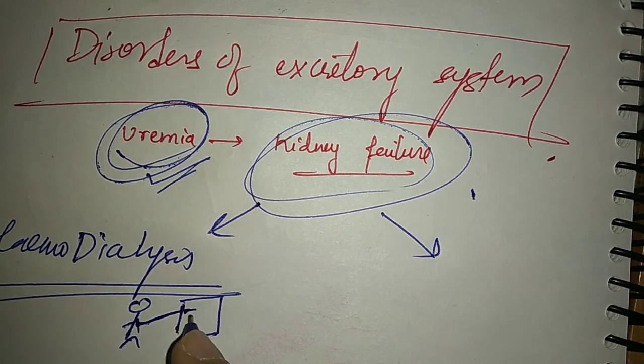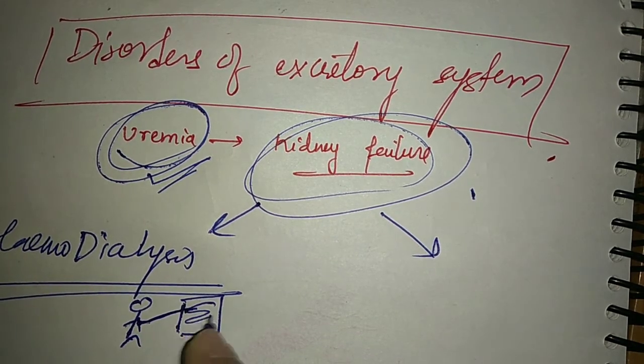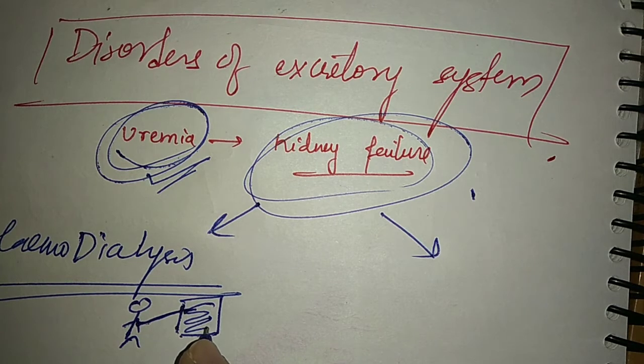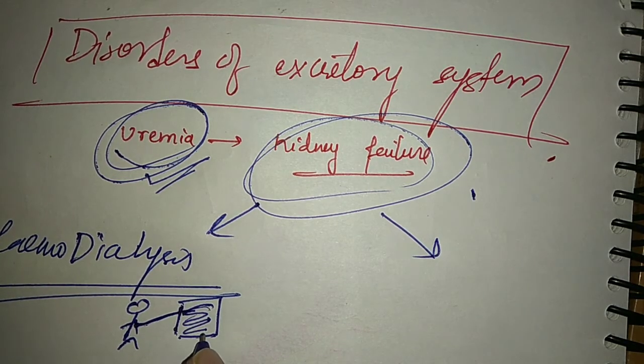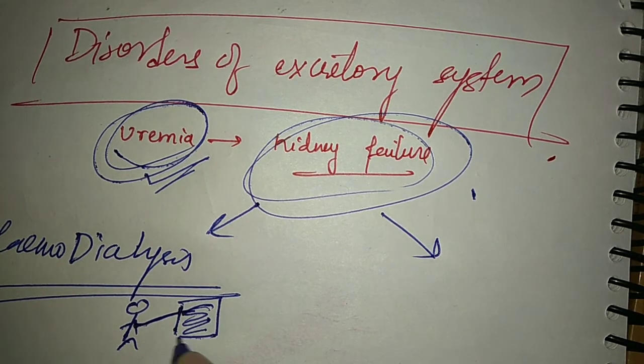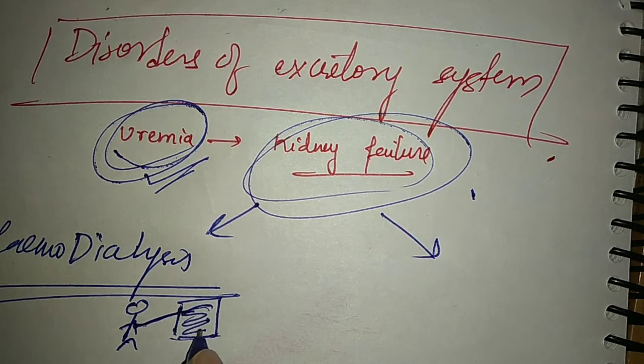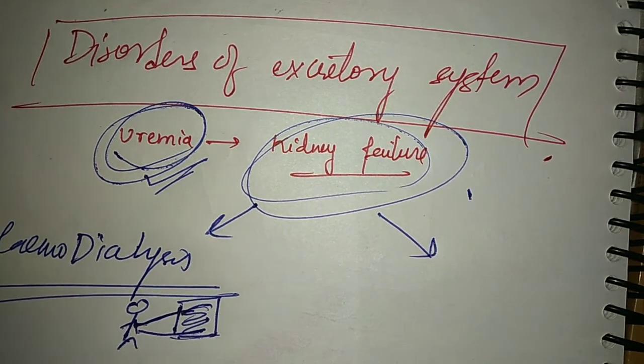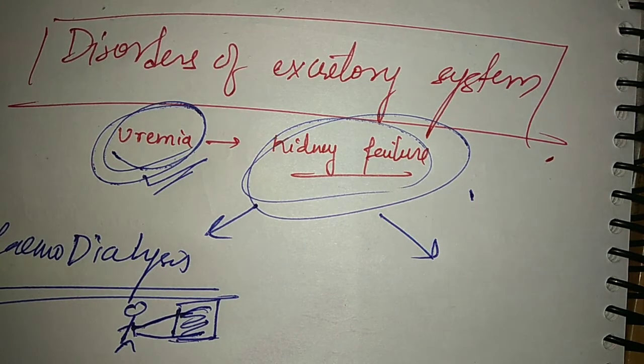In dialysis there is dialyzing fluid through which the blood is purified. In a way this machine does the work of the kidney, the dialyzer. And then this blood is sent back into the human body.